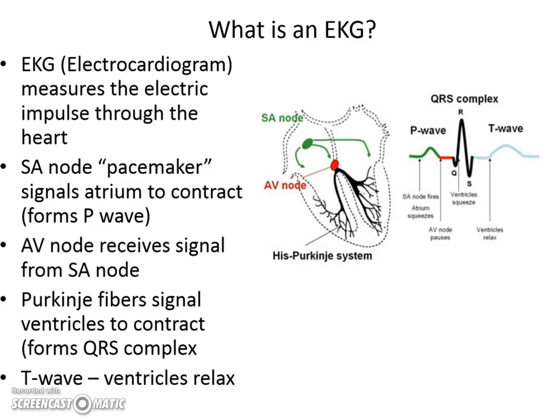After the SA node squeezes the atria, the AV node will receive the signal, and it'll be its turn. It's delayed slightly so that the atria will squeeze or contract before the ventricles will. The ventricles will contract as soon as the bundle of His in the Purkinje system signals the ventricles — the lower half of the heart — to squeeze.